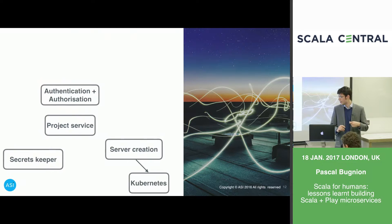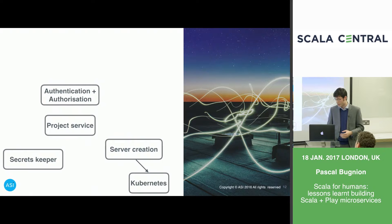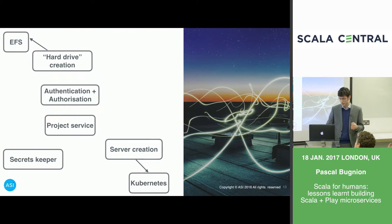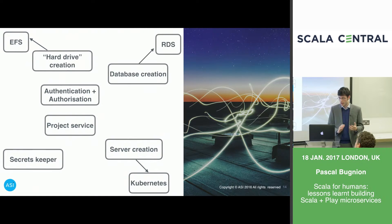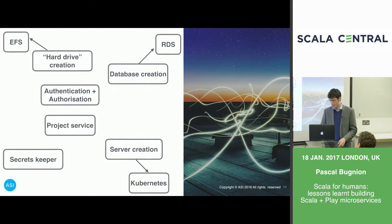Kubernetes is a platform for orchestrating Docker containers, released by Google — it just works, which is pretty good in the world of DevOps. If anyone has Docker container orchestration needs, I highly recommend looking at Kubernetes. We then have a service for managing hard drives needed for projects, backed by Amazon Elastic File System — basically NFS hard drives — and a service for managing relational databases, backed by Amazon RDS.